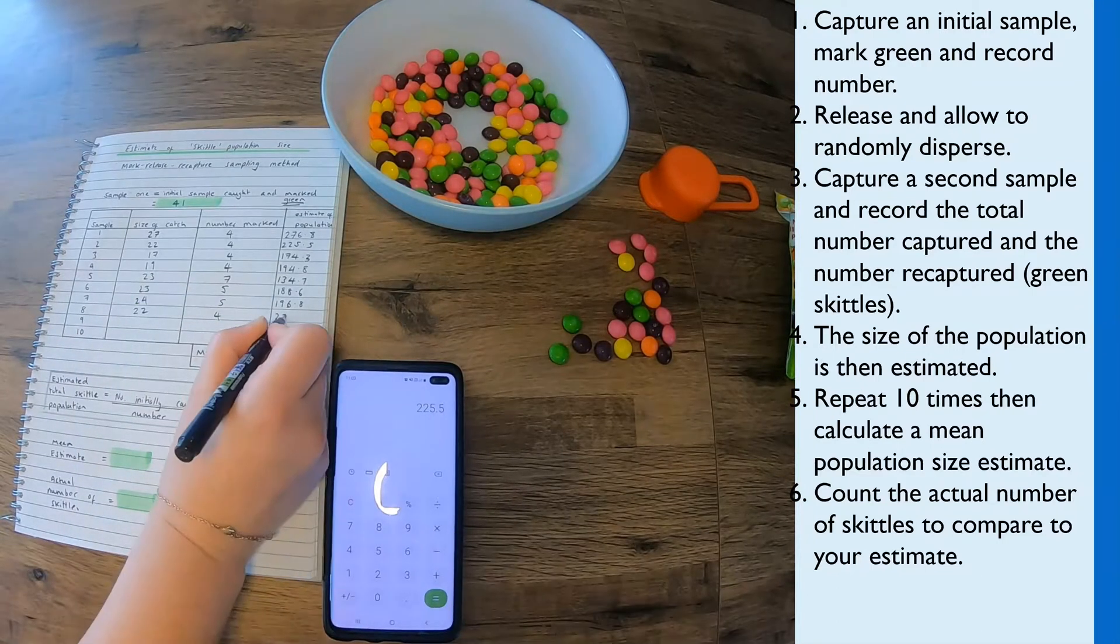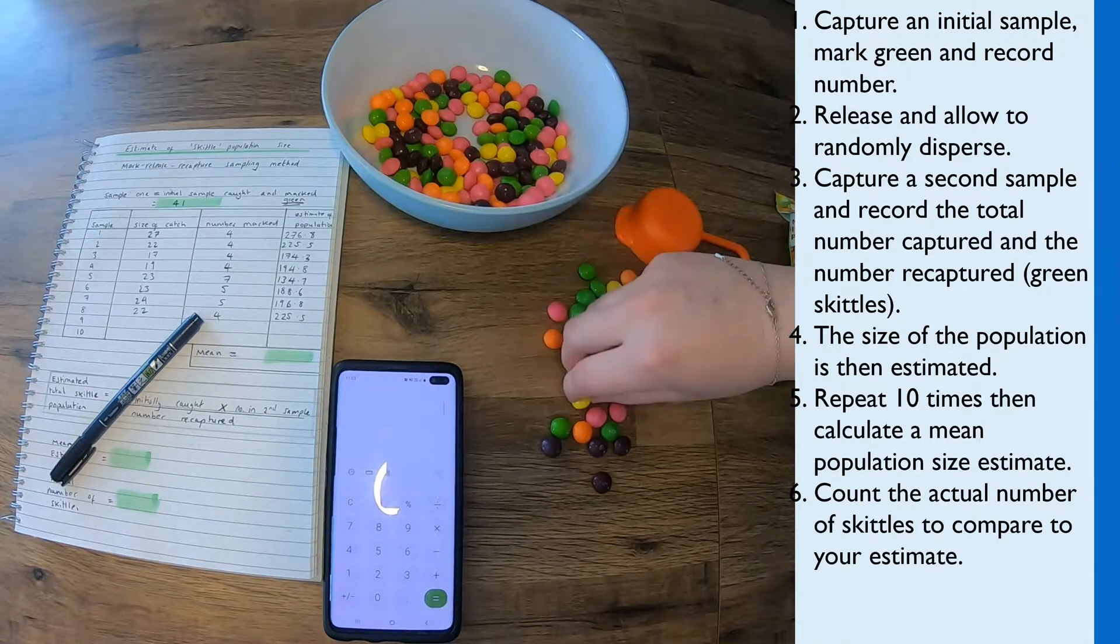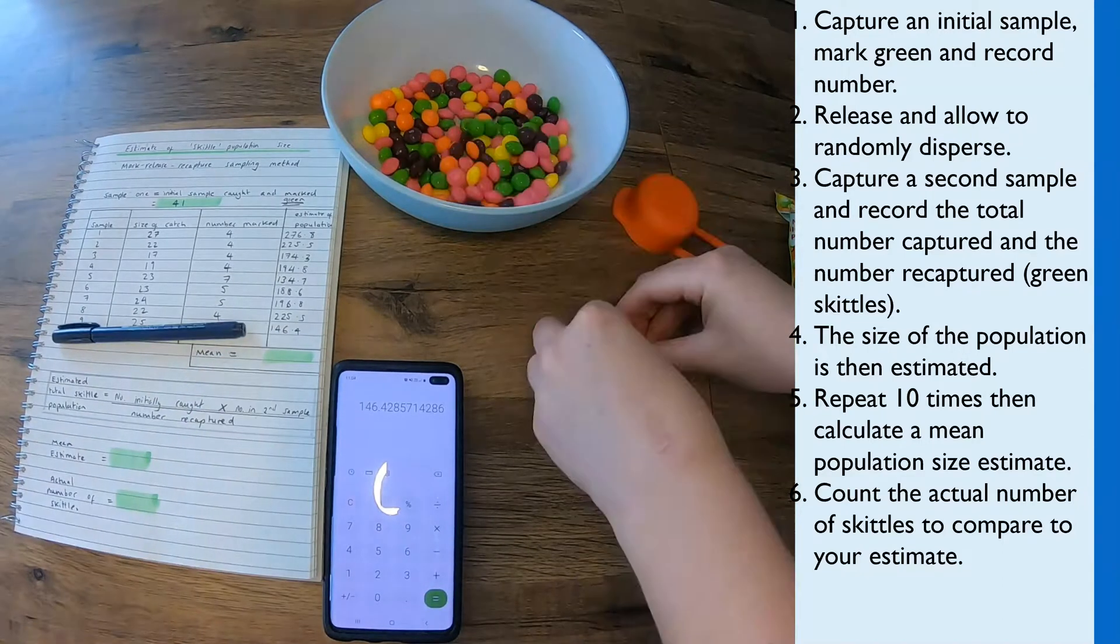So it's not a perfect model. It does vary depending on how large your sample is and whether the animals, or Skittles, are evenly distributing themselves each time.